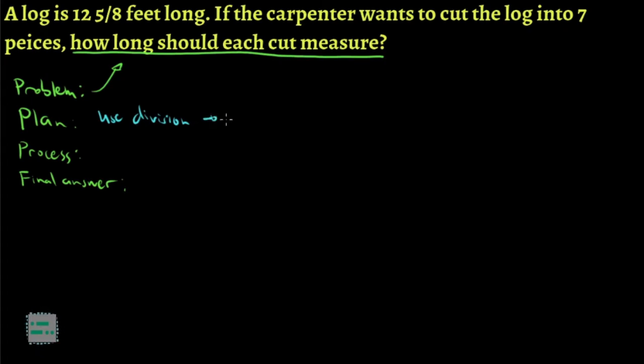Let's see if we need any other operations. If not, what do we need to divide? To be more specific, we need to divide 12 5/8 by 7. That's our plan. What will be the process? Let's reserve space below for the final answer.